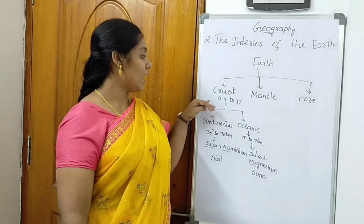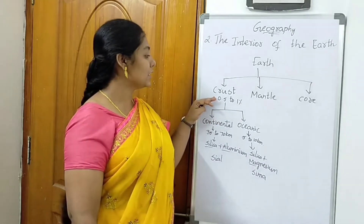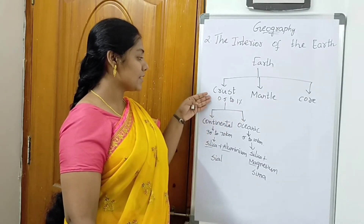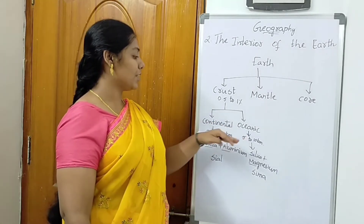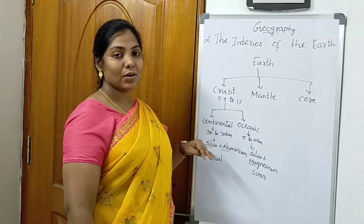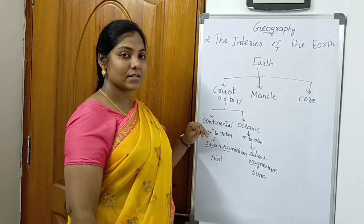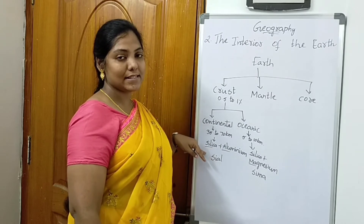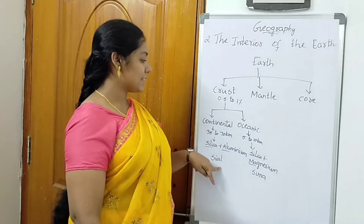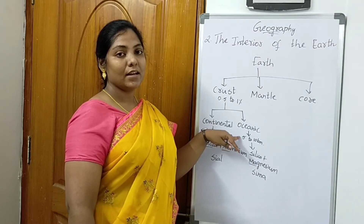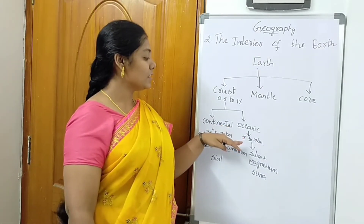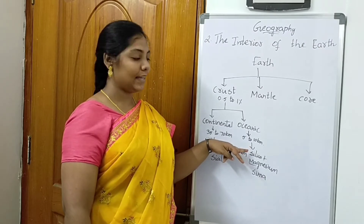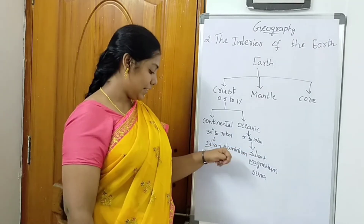To summarize the crust: it is the outermost and thinnest layer of the earth, covering 0.5 to 1 percent of the earth's volume. The continental crust occupies the continents, has a depth of 35 to 70 kilometers, and contains minerals silica and aluminum — called sial. The oceanic crust lies beneath the oceans, has a depth of 5 to 10 kilometers, and contains minerals silica and magnesium — called sima.